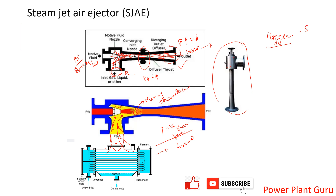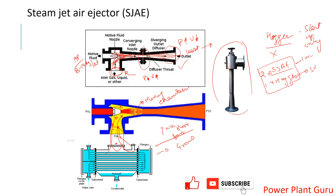There is also another ejector called the hogger, which is used only during startup to pull the initial vacuum. After startup, the hogger is cut off. In normal operation, there are typically two SJAE (steam jet air ejectors) — one working and one standby — plus one hogger. If you have any questions, please ask in the comment section, and if you liked the content, please like the video.